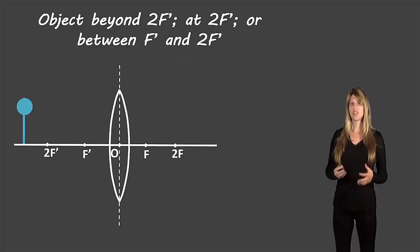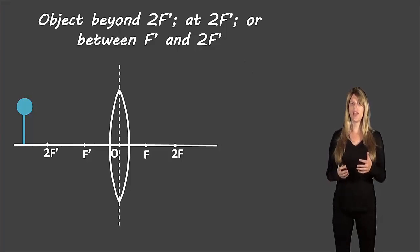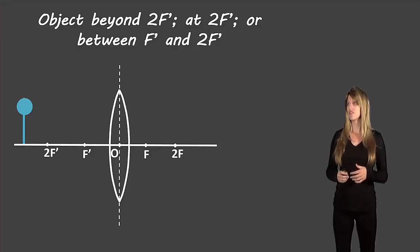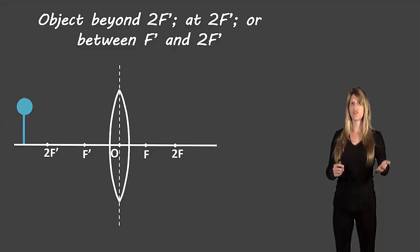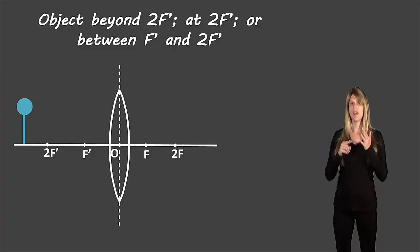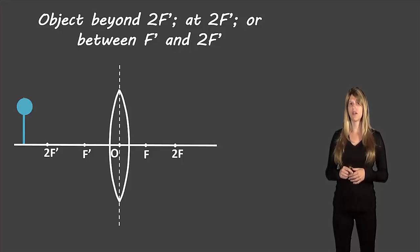Just like what we saw with the concave mirrors, there are a different set of rules depending on the location of the original object. We have five different locations: beyond 2f prime, at 2f prime, between 2f prime and f prime, at f prime, and between f prime and the lens. Those are the five locations that we'll talk about.